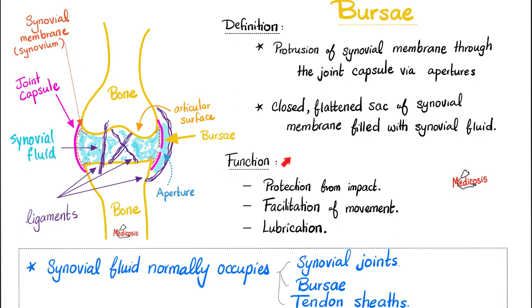Functions: protection, facilitation of movement, and lubrication. By the way, did you know that synovial fluid normally exists in the synovial joint, inside the bursa, and in the tendon sheath?